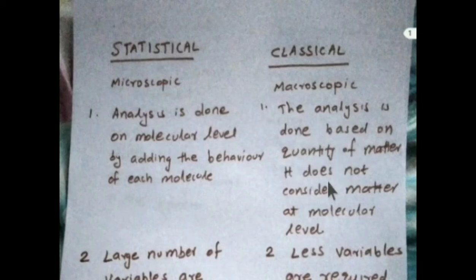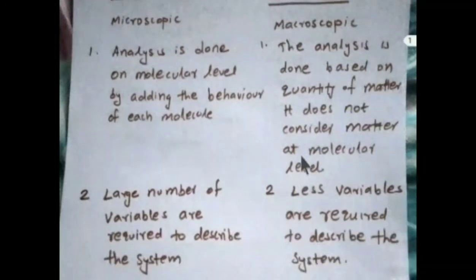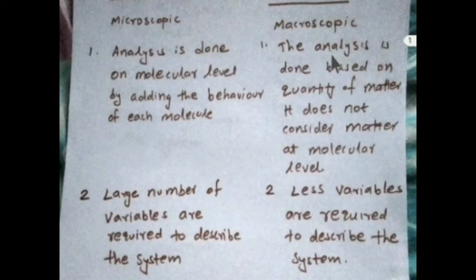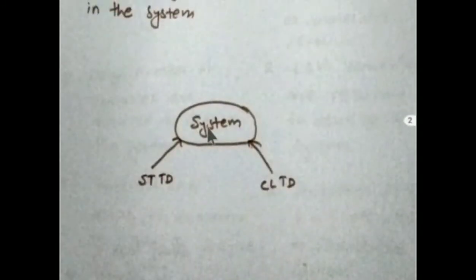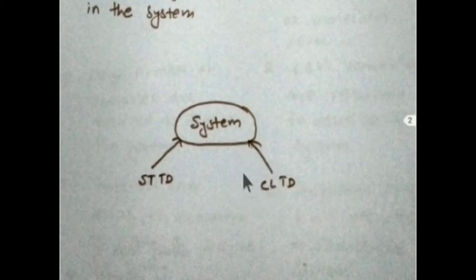In the classical approach, thermodynamic analysis is done based on the quantity of matter. It does not consider matter at the molecular level — this is a bulk level approach. The entire system is considered as a single entity. This is the essence of the classical approach, which is the basis of common thermodynamics that we study.